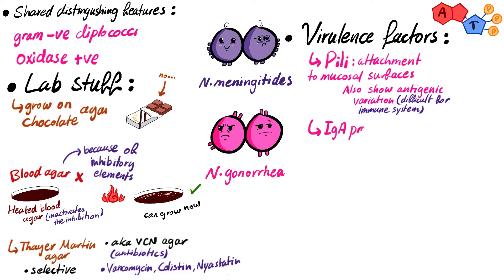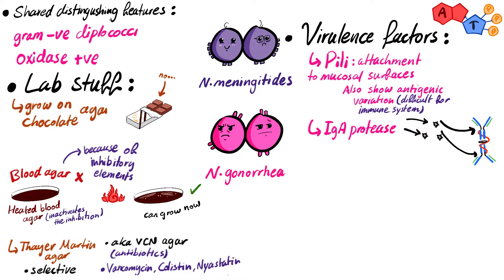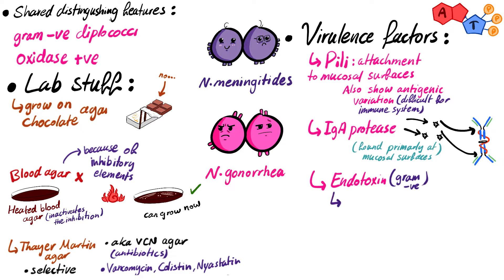Then we have IgA protease, which will cleave IgA antibodies at the hinge point. This facilitates Neisseria survival along the mucosal surfaces, because IgA antibodies are found predominantly there. Since Neisseria meningitidis is a gram-negative bacteria, it produces endotoxin, but its endotoxin is a lipo-oligosaccharide (LOS) rather than the lipopolysaccharide (LPS) found in other gram-negative bacteria — essentially an alternative version of LPS.